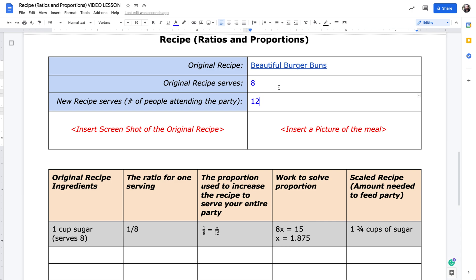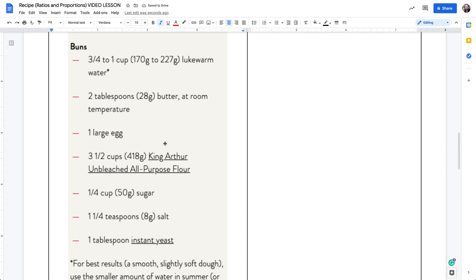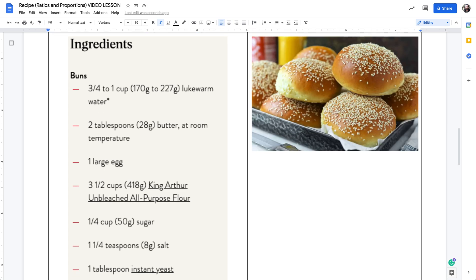I then take a screenshot of my recipe ingredients over on the website. Click on the insert image option, insert image, and I will upload the image from my computer where my image was saved. So here's the screenshot of my ingredients. I then follow the same process to insert a picture of the meal. Here is a picture of the burger buns that I took from the recipe.